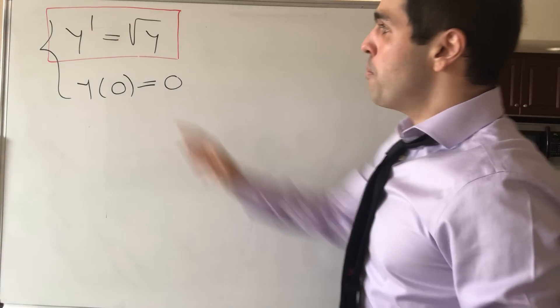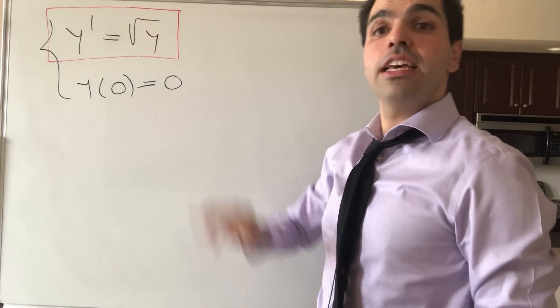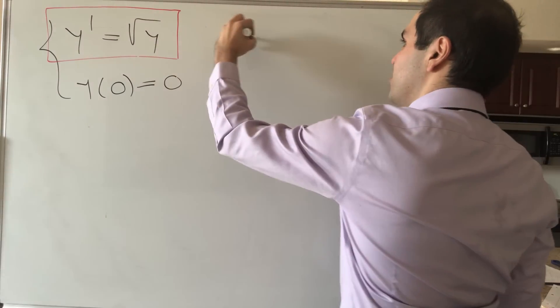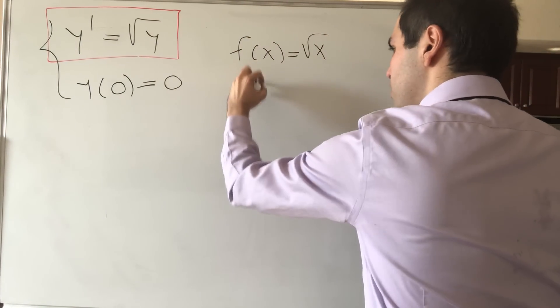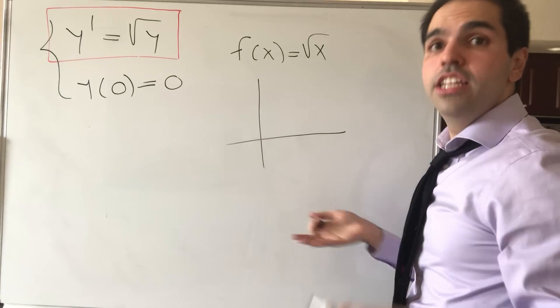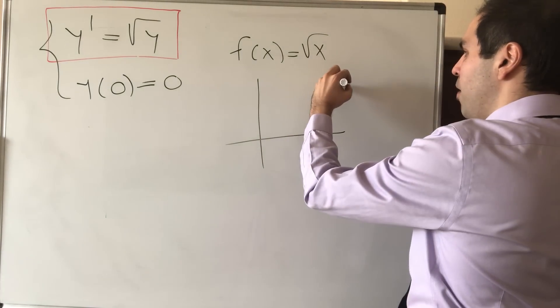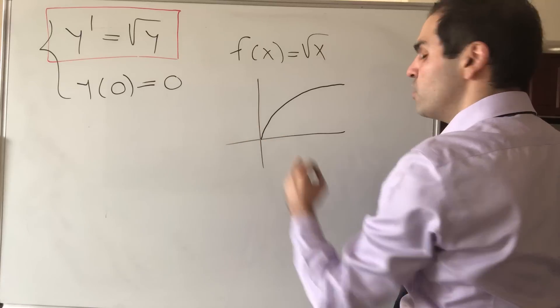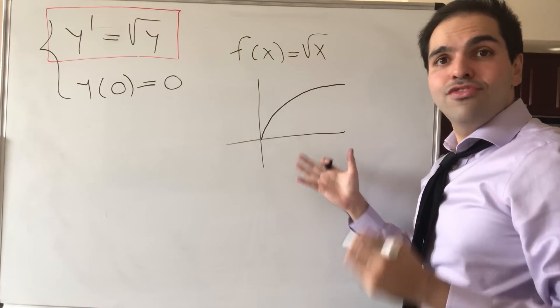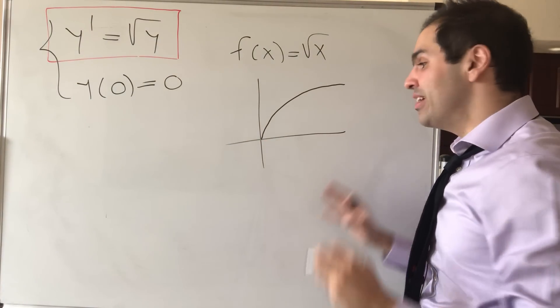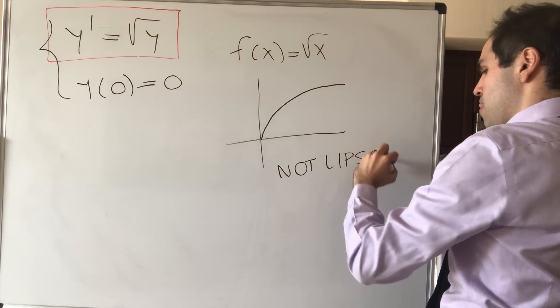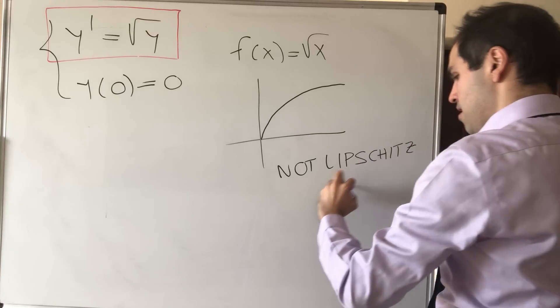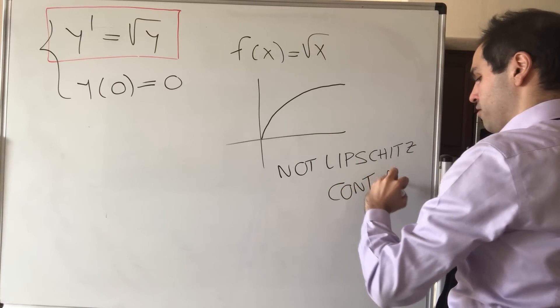Because y prime equals square root of y, well, in this case, the function is the square root function. So let's say f of x equals square root of x. Now, it is continuous. So that's not a problem. But what went wrong is that this function, even though continuous, is not what's called Lipschitz continuous. At zero, if you want.